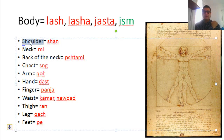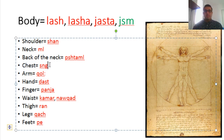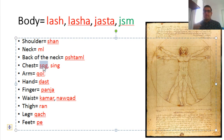Shoulder is shan in Kurdish. Neck is mil. Back of the neck is pshhtamil. Chest is seng — in Sulaymaniyah dialect you pronounce it as seng. We write it as seng but read it as seng, where the ng at the end is nasal.